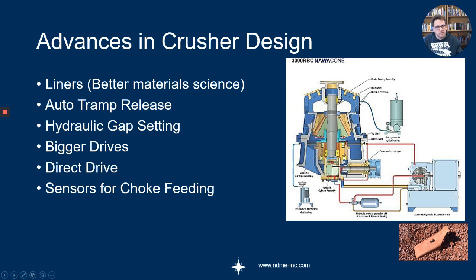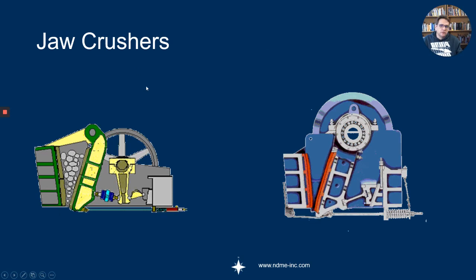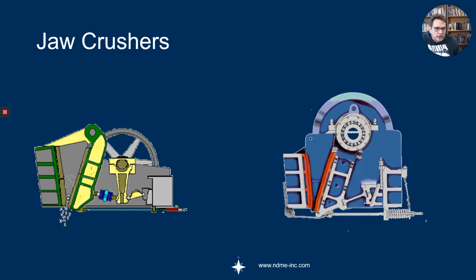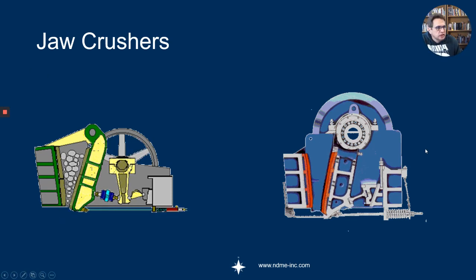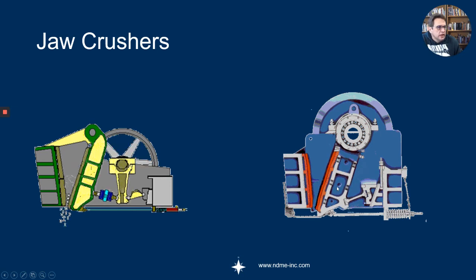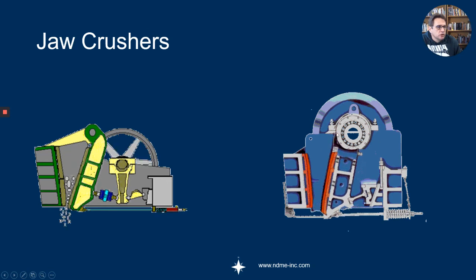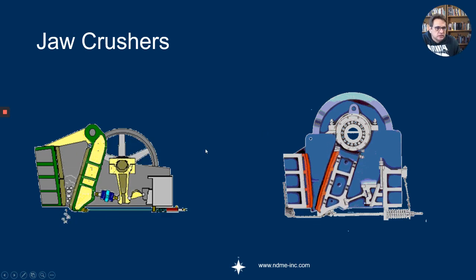The jaw crusher's main function is to get material that can be transportable on a conveyor. There are two types—the double toggle and the single toggle. The single toggle is the more modern one. You can see it's got a type of chewing motion that allows it to have slightly larger capacities than the double toggle type of jaw crusher.